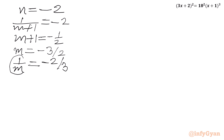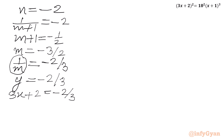Now y was 3x + 2, and m was 1/y, so y = 1/m = -2/3. Therefore 3x + 2 = -2/3. Subtracting 2 from both sides: 3x = -2/3 - 2 = -2/3 - 6/3 = -8/3. Dividing both sides by 3: x = -8/9.